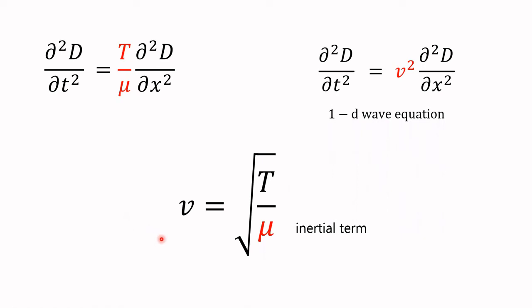When you tune a guitar and tighten the tuning pegs at the end, you're really adjusting the tension. As a result, you're affecting the speed at which a wave propagates down the string, and that's going to affect the pitch produced by the string as it vibrates. We will cover all of that in the next chapter.